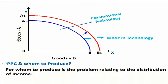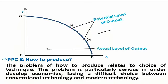So this is how you deal with PPC and how to produce. The problem of how to produce is related to the choice of techniques of production. This problem is particularly serious in underdeveloped economies facing a difficult choice between conventional technology and modern technology. In a country like India, if the economy implements traditional technology, the cost of production increases and it is a time-consuming process.